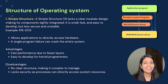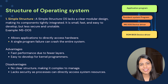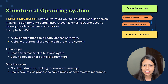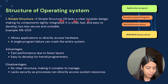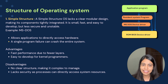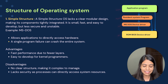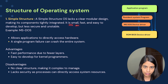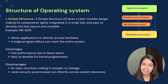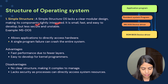The first structure is simple structure. A simple structure operating system lacks a clear modular design, making its components tightly integrated. It is small, fast, and easy to develop, but less secure and unstable. The example is MS-DOS.